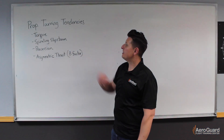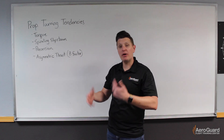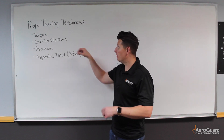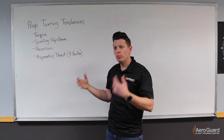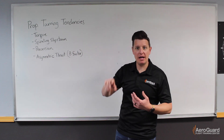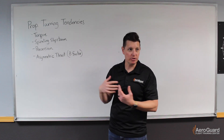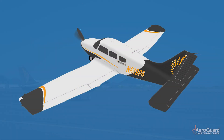Next up is spiraling slipstream. To better understand this, I'll have an image on the screen. The idea here is that as the propeller rotates, it creates what we call prop wash, which is just the air that it's pushing behind the airplane. That slipstream is rotating in the same direction that the propeller was rotating.